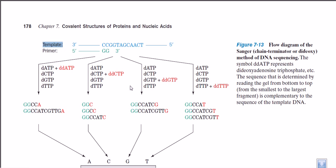The actual goal of using these ddNTPs is that dideoxy nucleotide triphosphates have the capability of terminating the elongation of DNA replication. As the complementary strand starts to grow, whenever it encounters a dideoxy nucleotide triphosphate, it will attach to it and stop the replication process right there.